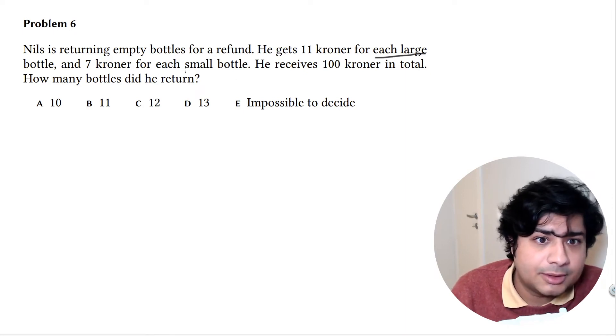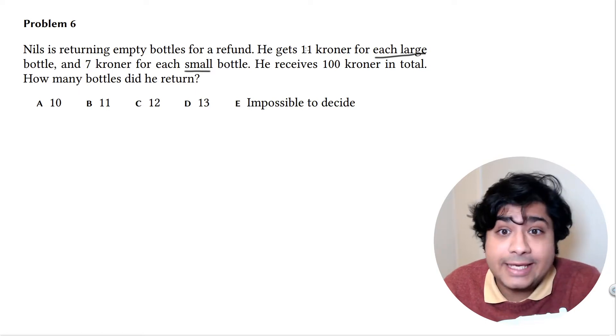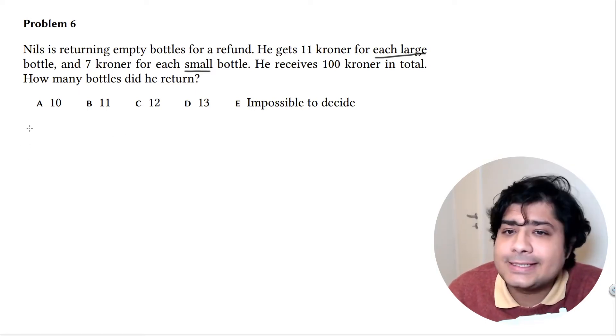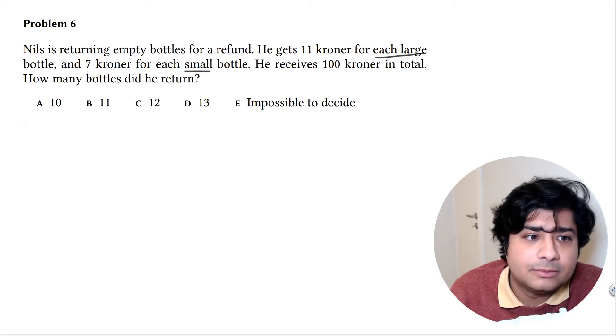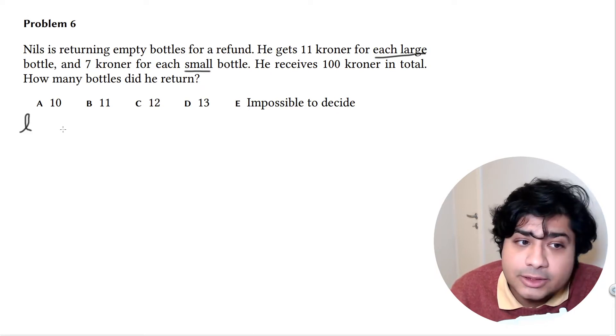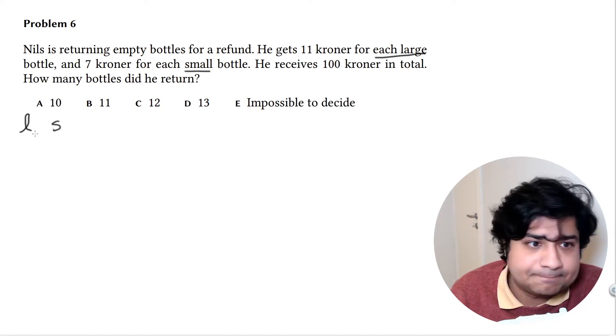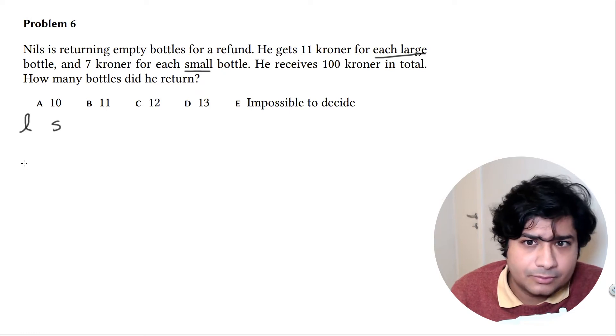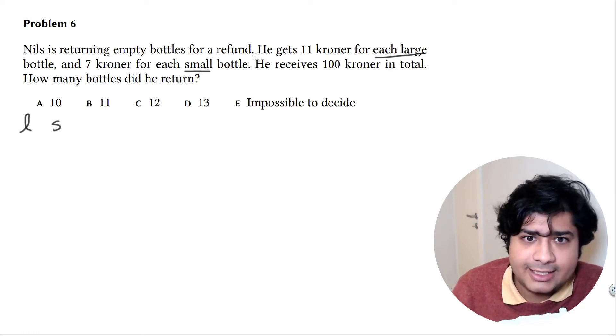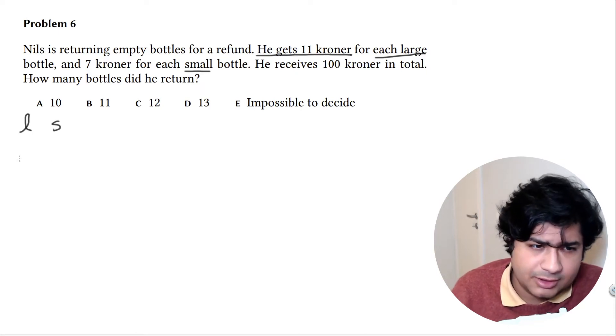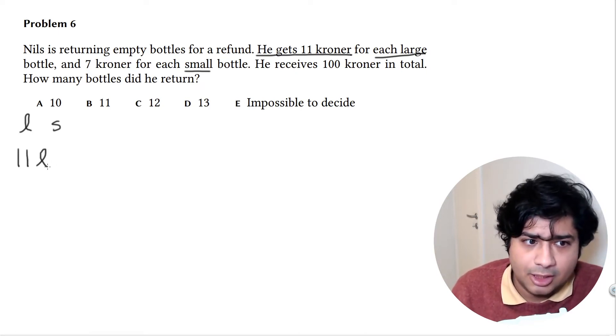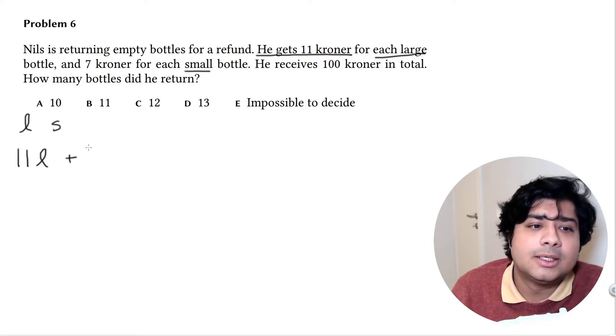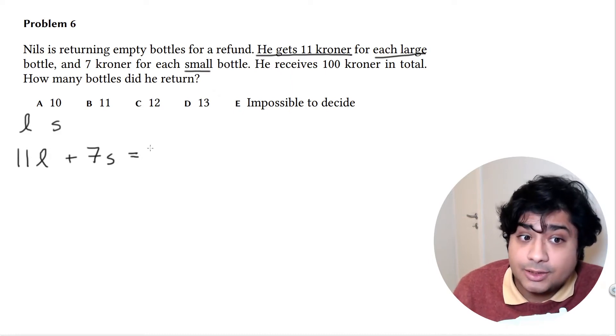Large bottles are L and small bottles are S. The number of small bottles is S. They say 11 kroner for each large bottle, so let's write 11L plus 7S, and he receives 100 kroner in total.